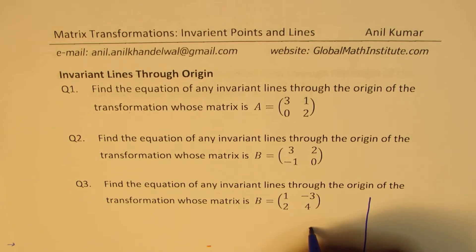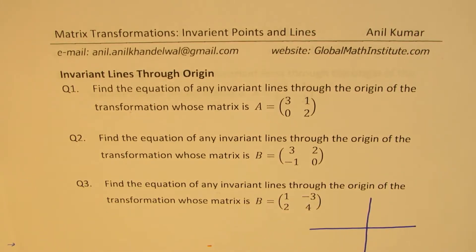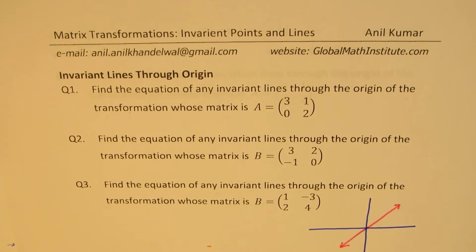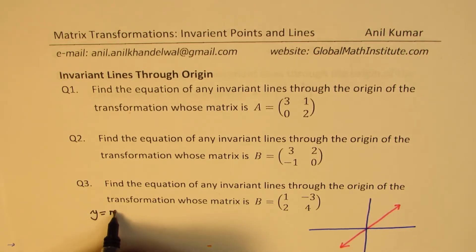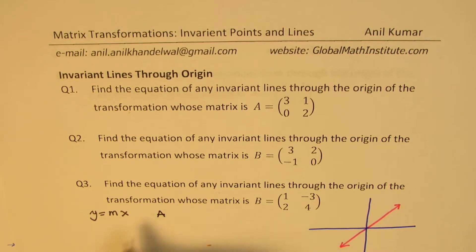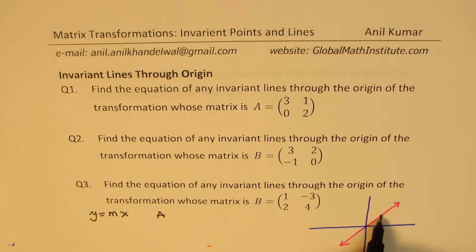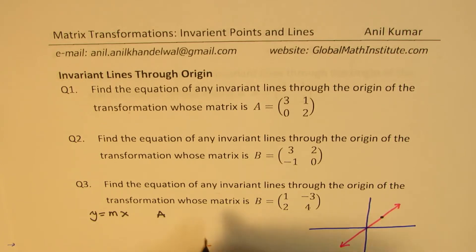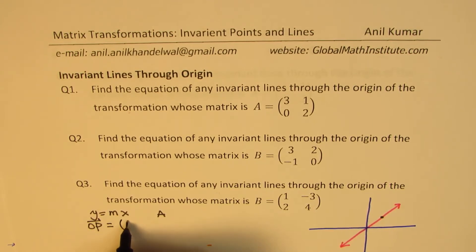Now, what we really mean is something like this. We're trying to say that there are lines which are going through the origin. So let's take a line going through the origin like this. In general, the equation of this line will be y equals mx, since the y-intercept is the origin itself. Now, we're given a different transformation matrix, and the position vector for a point on the line can be written as T, MT.